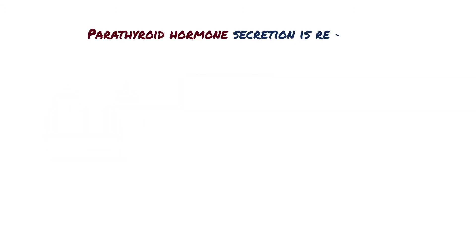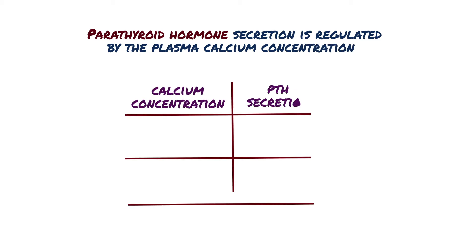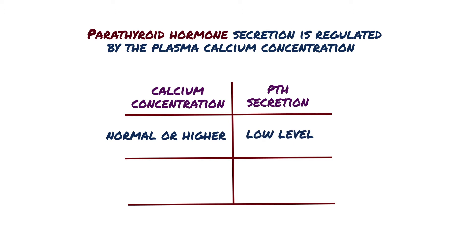Parathyroid hormone secretion is regulated by the plasma calcium concentration. When the total calcium concentration is in the normal range or higher, parathyroid hormone is secreted at a low level. However, when the plasma calcium concentration decreases, parathyroid hormone secretion is stimulated, reaching maximal rates.